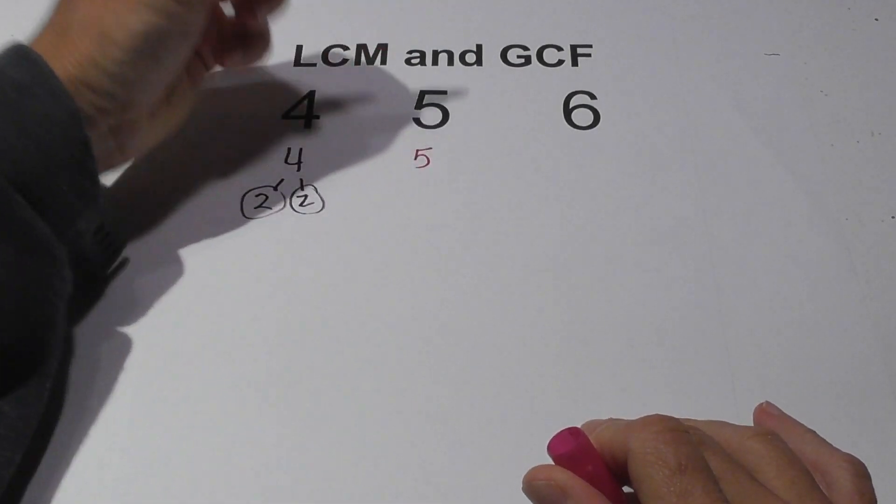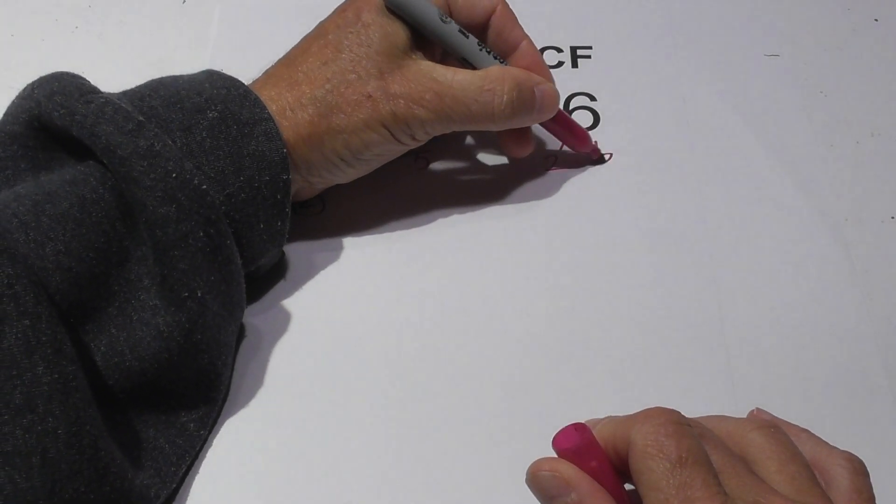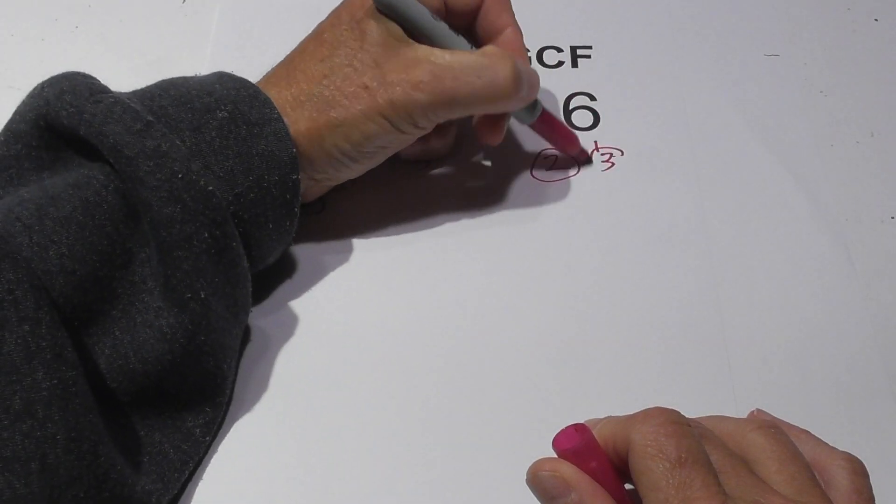5 is prime, so that's the prime factors. I don't need to do a factor tree. And then for 6, it's 2 times 3. Circle both because they're prime.